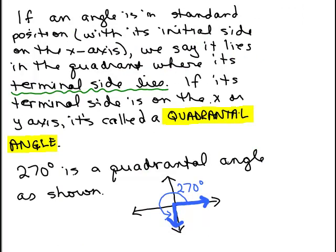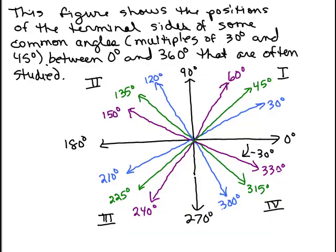If its terminal side is on the x or y-axis, it's called a quadrantal angle. So 270 degrees is a quadrantal angle as shown because just like negative 90 degrees, its terminal side is right on the y-axis. This would also be true of a 180-degree angle because its terminal side is right on the x-axis.